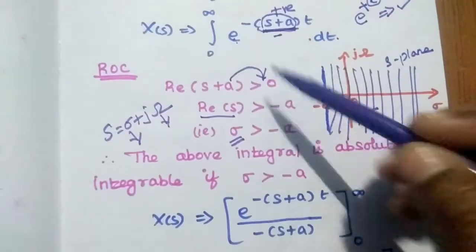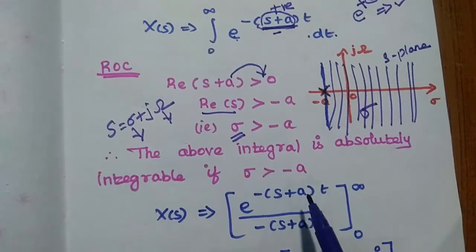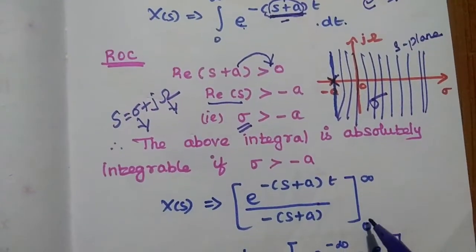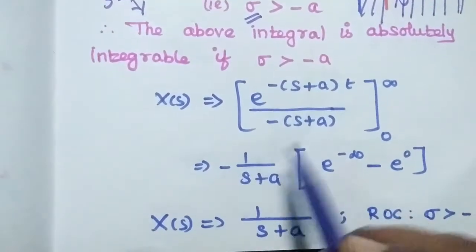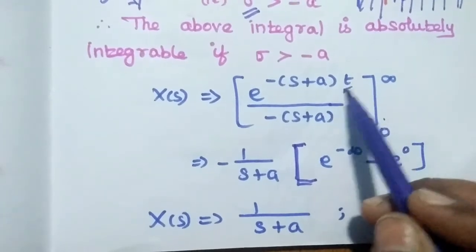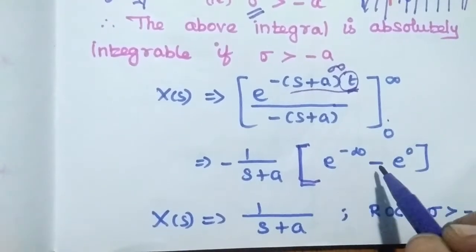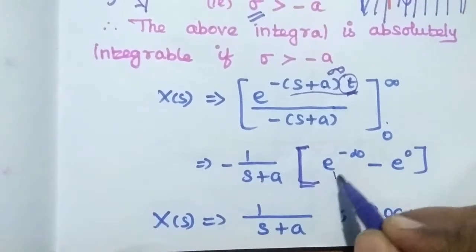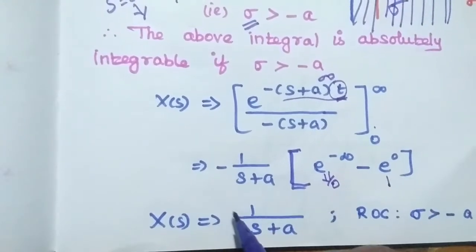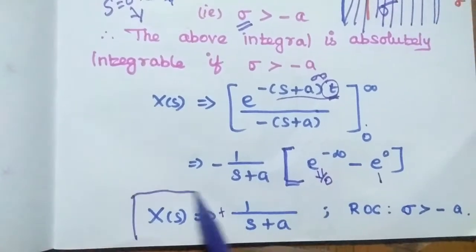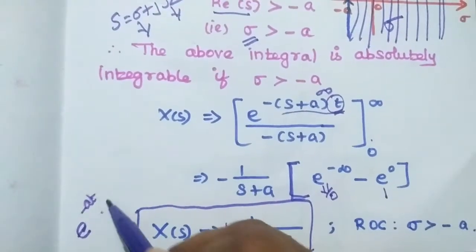After finding the region of convergence, we take the integration. The integral of e^(−(s+a)t)dt equals e^(−(s+a)t) divided by −(s+a), with limit from 0 to ∞. Taking −1/(s+a) outside and substituting the limits: at t=∞, e^(−∞) = 0; at t=0, e^0 = 1. So we get −1/(s+a) times (0 − 1) = 1/(s+a). This is the Laplace transform for the given signal e^(−at)u(t).